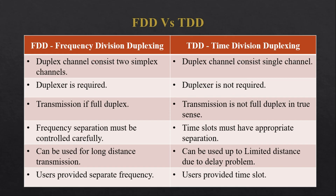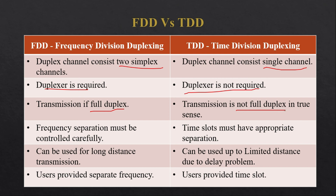To summarize FDD and TDD: FDD requires a duplexer because it uses two simplex channels at different frequencies, while TDD uses only a single channel and does not require a duplexer. FDD supports full-duplex communication — you can transmit and receive simultaneously — whereas TDD is not full duplex since transmission and reception occur in separate time slots. In FDD, frequency separation must be controlled carefully to avoid interference. In TDD, time slots must not overlap each other.